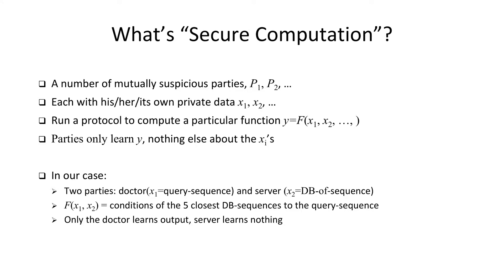Let me recall what secure computation is. The generic form: we have multiple parties, each with their own private input, and they want to compute some aggregate function across all their inputs in a private setting — learning the output but not revealing their inputs to each other. In our case, only two parties: the doctor with the patient's sequence, and the server with the database. The function to evaluate is the conditions associated with the five closest database sequences to the query. The twist: only the doctor is supposed to learn the outcome; the server doesn't need to learn anything.